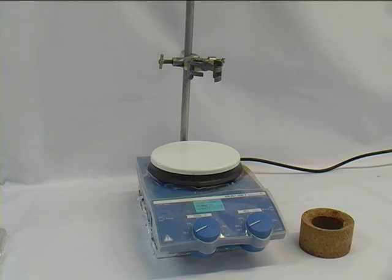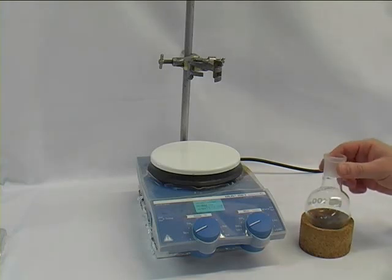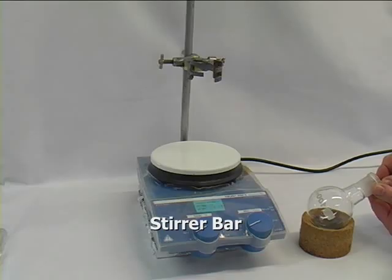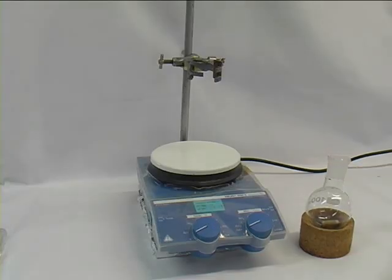So here we have our cork ring. We will put on our round bottom flask. And we have to put in a magnetic stirrer bar. Don't throw it in, but rather glide it in from the sides, because that helps to prevent shattering the glass.